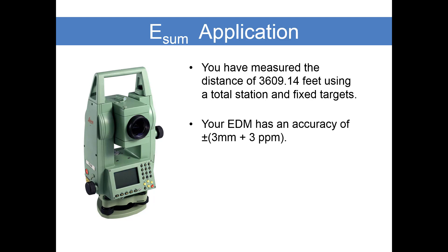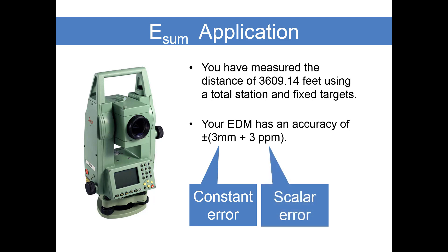Let's apply this to something we deal with on a regular basis. Our scenario is we have measured a distance of 3609.14 feet using a total station and a fixed target. The electronic distance meter has an accuracy of plus or minus 3 millimeters plus 3 parts per million.